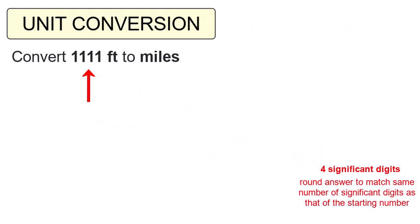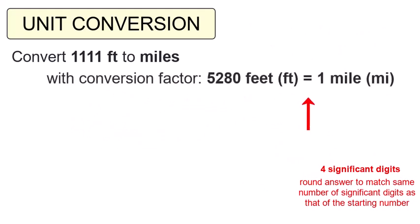Now let's follow our simple process and apply it to this conversion. We find the conversion factor between feet and miles and write it down: 5,280 feet equals 1 mile. We'll write down our starting number, 1,111 feet, and then place it over 1 as a fraction.